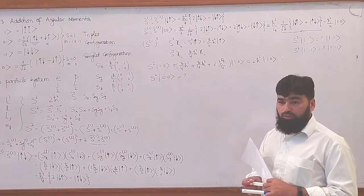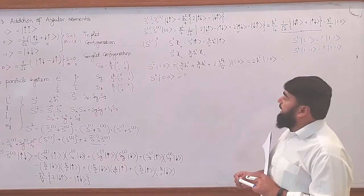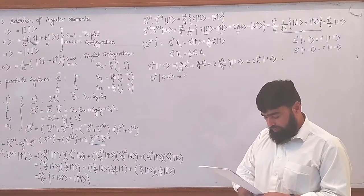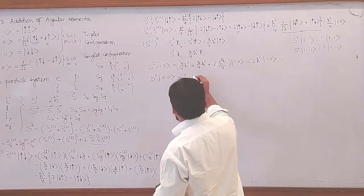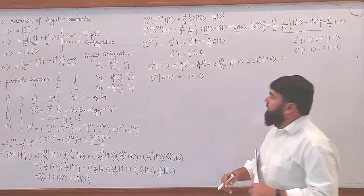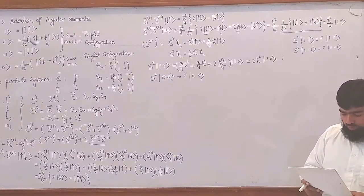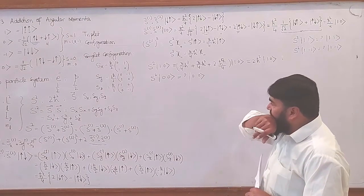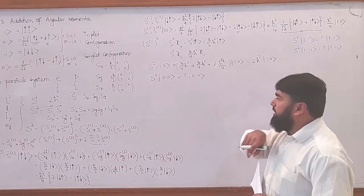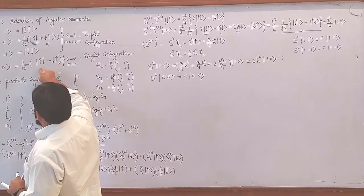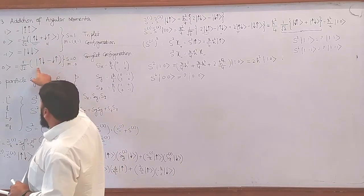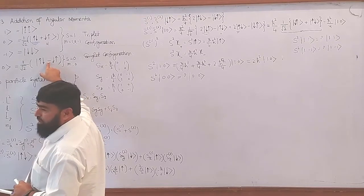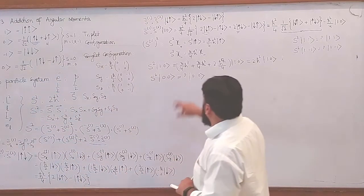Why not? This will also be an eigenfunction of S². But what will be the eigenvalue? The only difference of this state from the triplet state is the minus symbol. We have already calculated the triplet case, so we will just put a minus sign here and come back to this result.